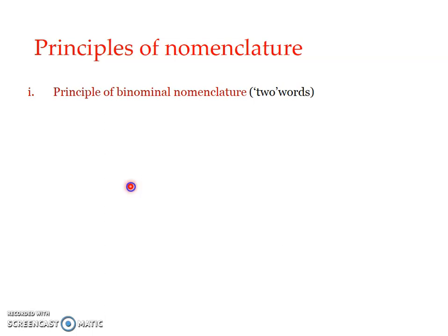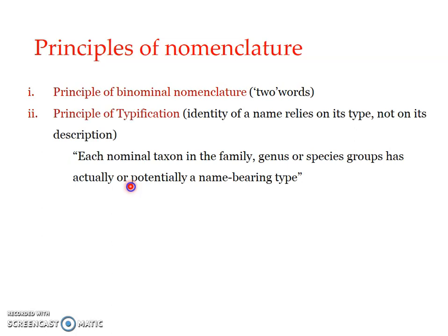Trinomial nomenclature is also accepted and is used when a subspecies is to be named; otherwise, binomial nomenclature applies. The next principle is the Principle of Typification, which states that each nominal taxon in the family group, genus group, or species group has actually or potentially a name-bearing type. This means every organism when named is based upon a specific specimen, and that specimen is referred to as a type.